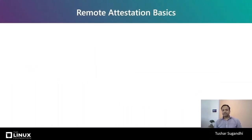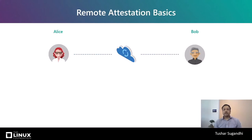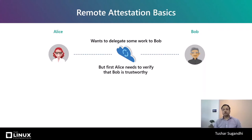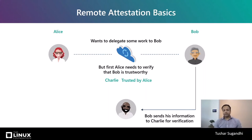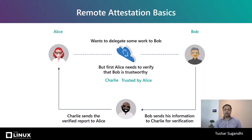Let's work through an example. Here we have Alice who wants to delegate some work to Bob, but first Alice wants to verify that Bob meets a certain security bar. Alice doesn't want to get into the business of verification herself — she may not have the right expertise or resources. So she relies on Charlie for verification. Charlie is trusted by Alice. Bob sends his information to Charlie, and Charlie sends Bob's verified report to Alice. Here, Alice is a relying party, Bob is an attestee, and Charlie is a trusted verifier.